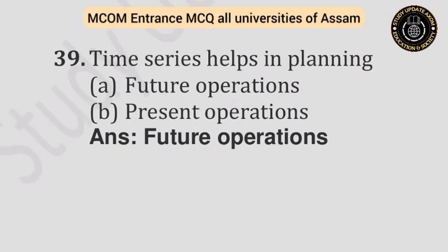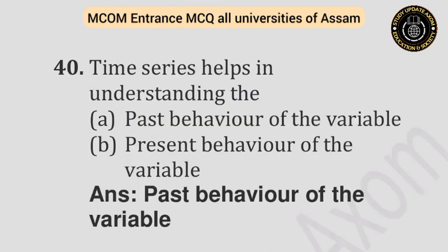Question number thirty-nine: Time series helps in planning — Option A: Future operations. Option B: Present operations. Answer is future operations. Question number forty: Time series helps in understanding the — Option A: Past behavior of the variable. Option B: Present behavior of the variable. Answer is past behavior of the variable.